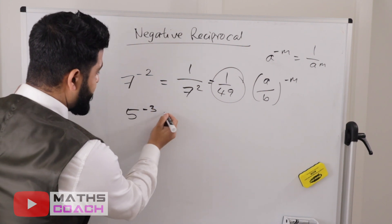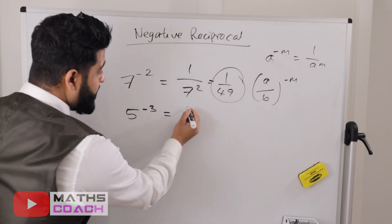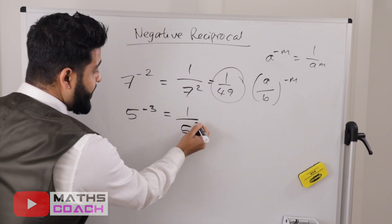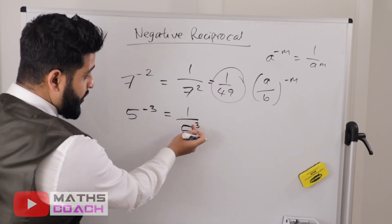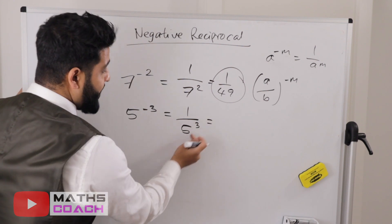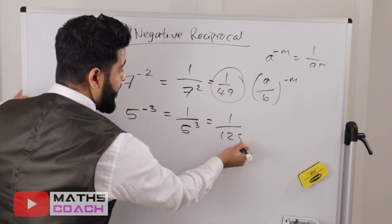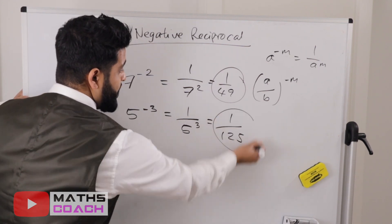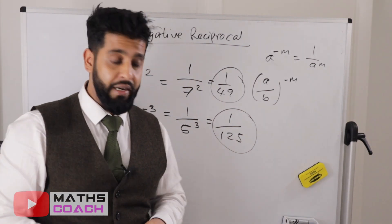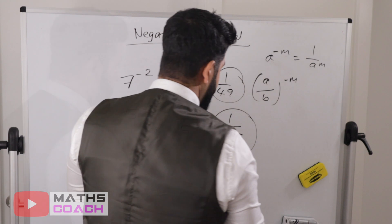Another example: 5 to the power of minus 3. The negative means 1 over, so it becomes 1 over 5 cubed. We don't write the negative anymore because we've dealt with it. 5 times 5 times 5 gives 125, so the answer is 1 over 125.